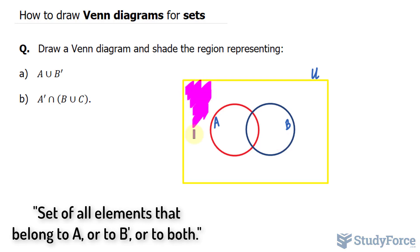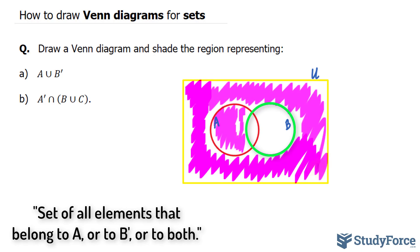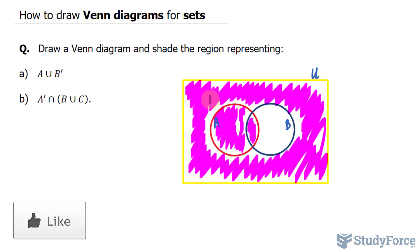So I'll begin by shading everything inside of U, except for this area right here. And also don't forget that this part also belongs to A. So notice that I've highlighted all of A, and I've highlighted all of the complement of B. That's the answer to question A.